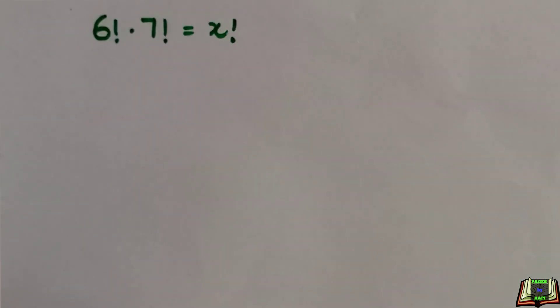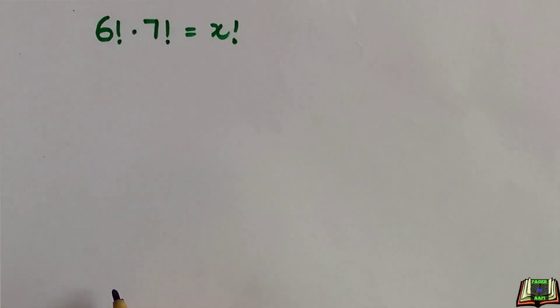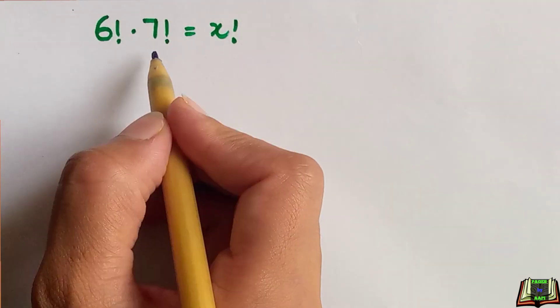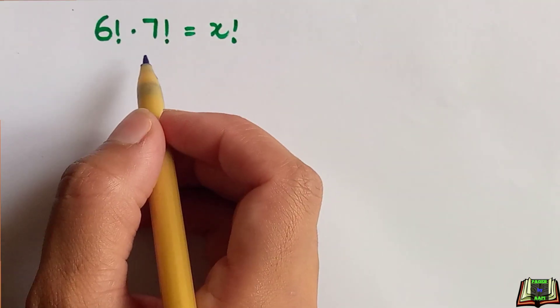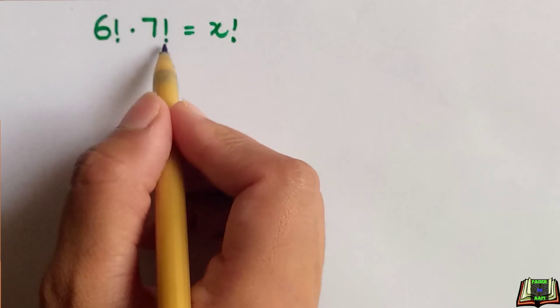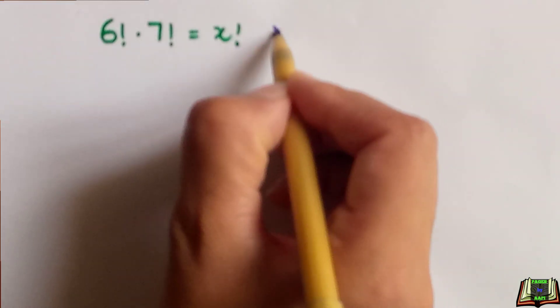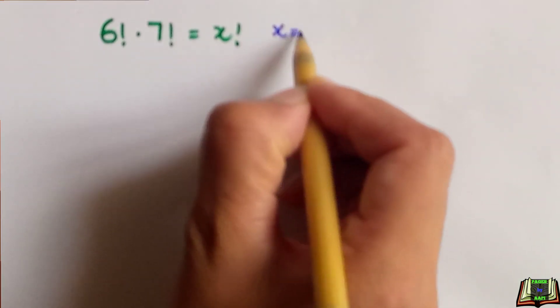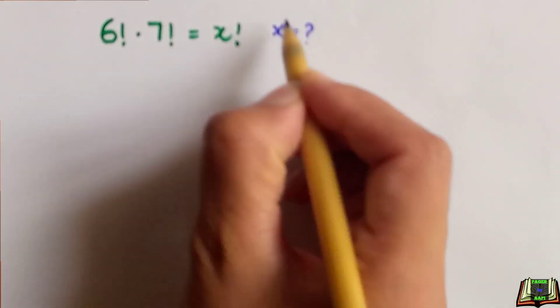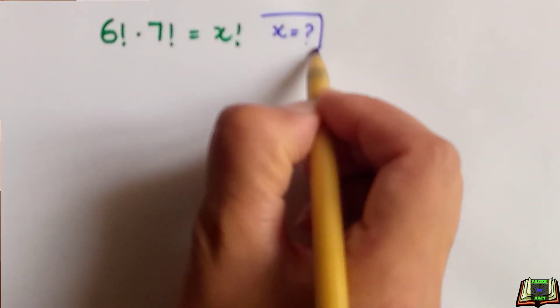You are going to love this factorial question after watching the solution. If 6 factorial times 7 factorial is equal to x factorial, then we have to find the value of x in this question.